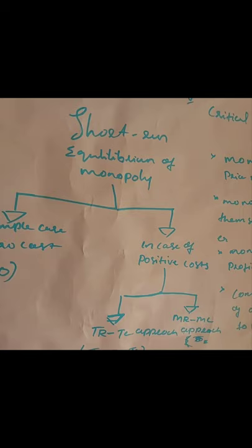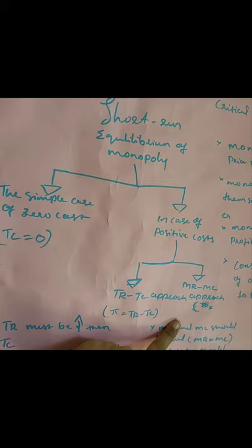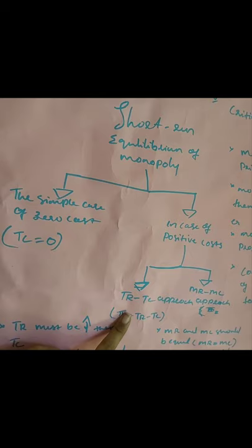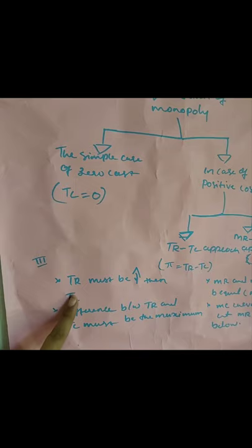In the case of positive cost, equilibrium of monopoly can be analyzed by two methods: the TR-TC approach and the MR-MC approach. Under the TR-TC approach, the firm reaches equilibrium when profit is maximum. Profit equals TR minus TC. Two conditions apply: TR must be more than TC, and the difference between TR and TC must be maximum.